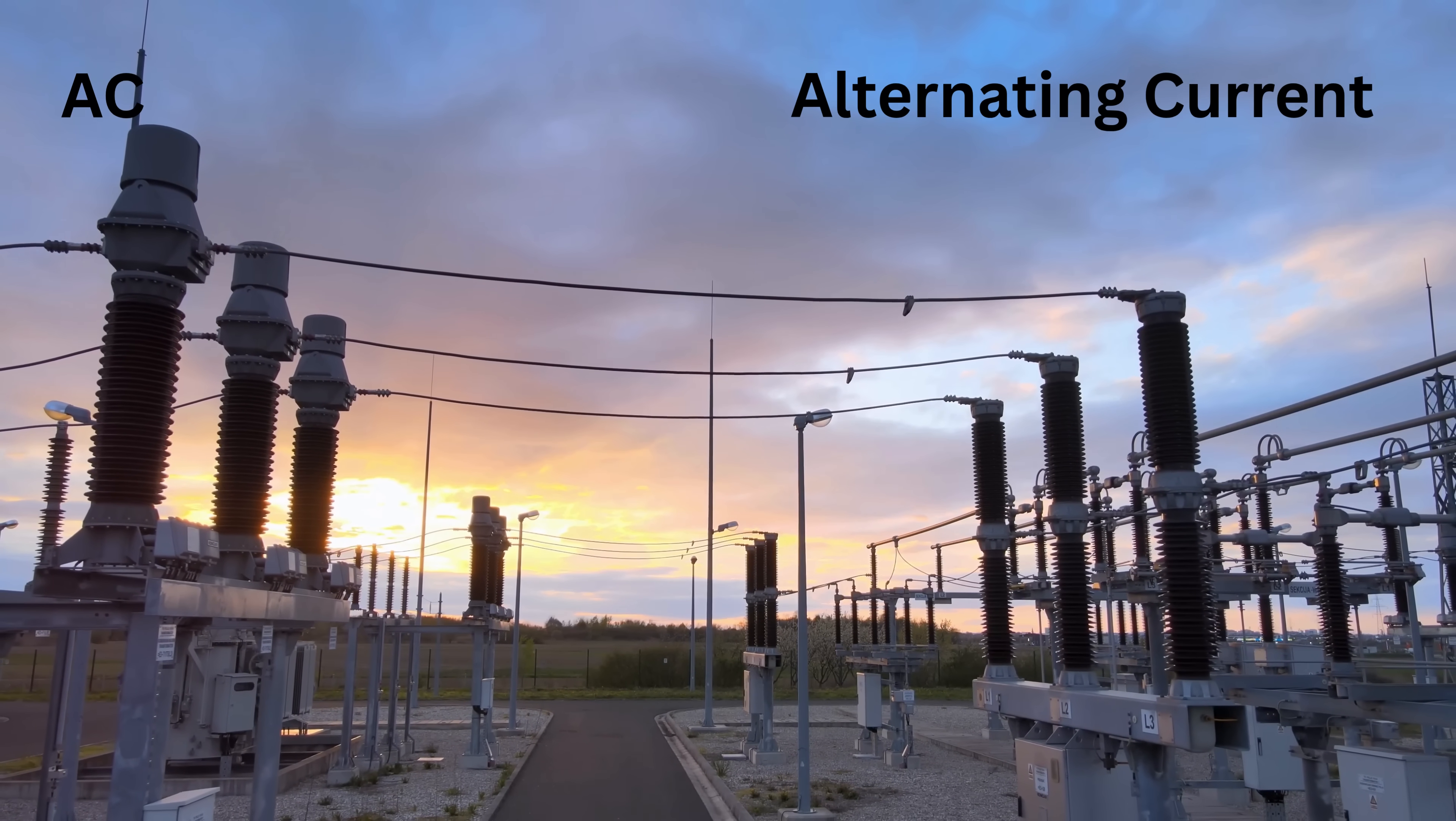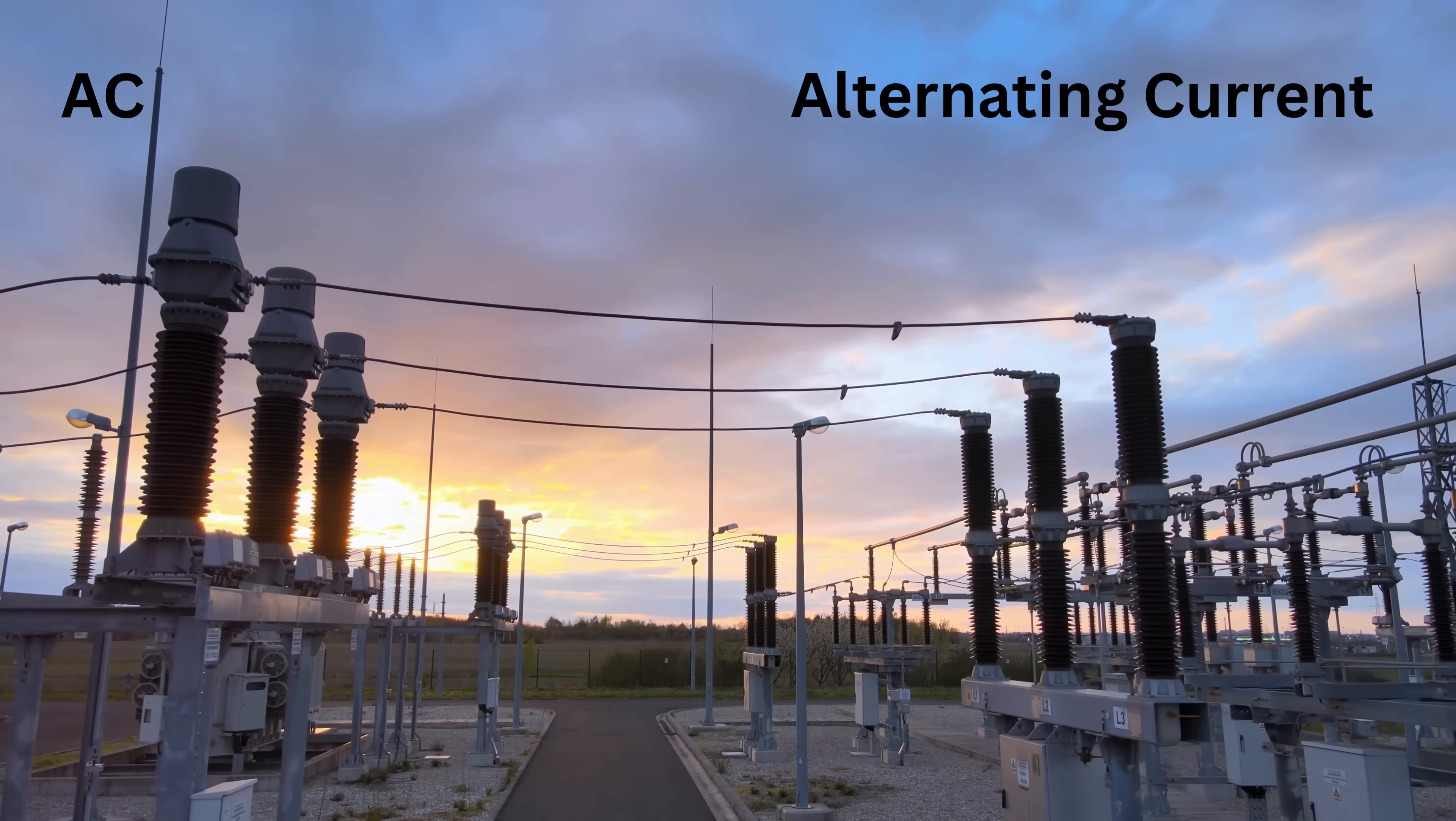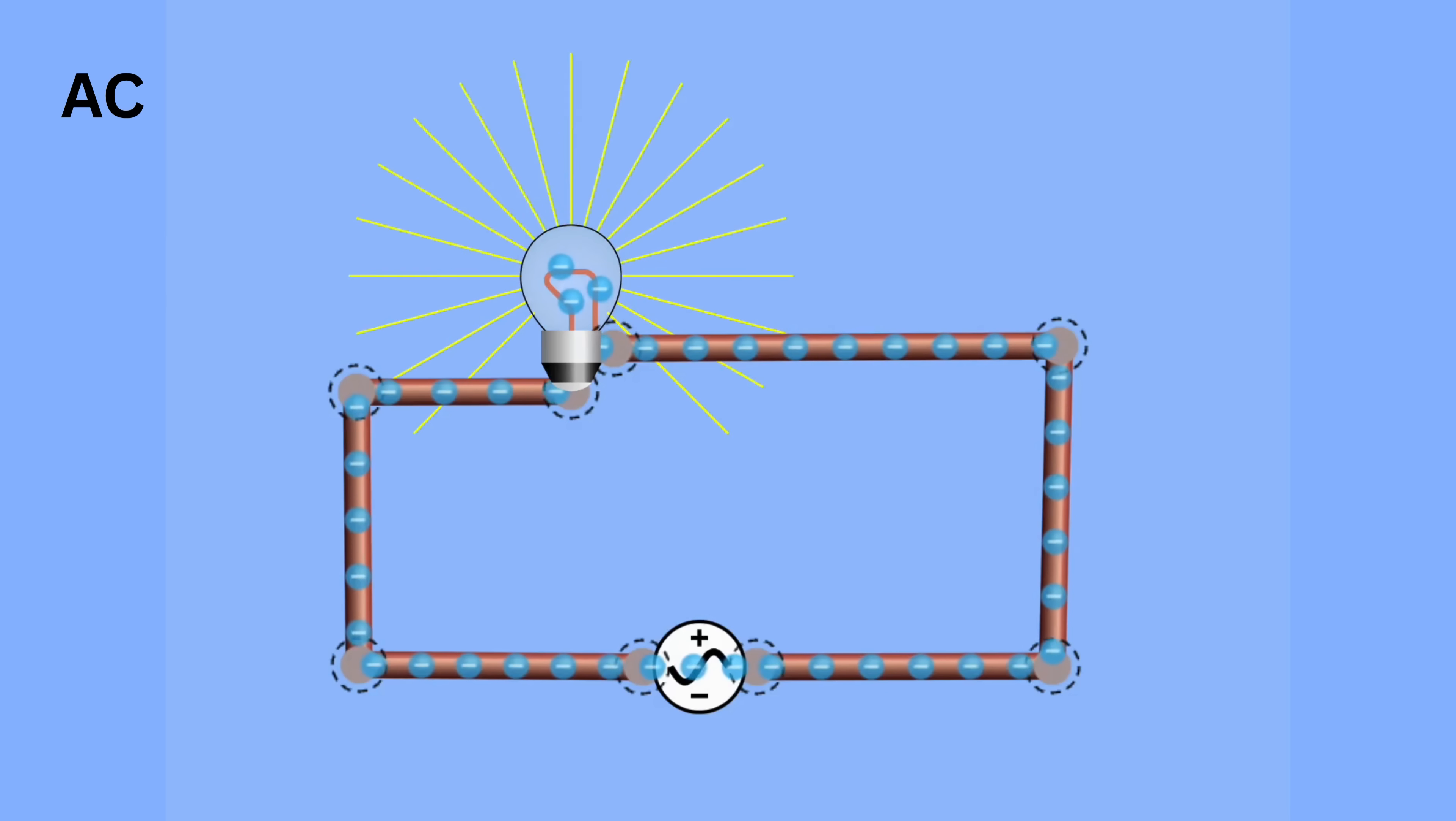Now, let's come to alternating current, which is the type of electricity that powers our homes, schools, and industries. In AC, the flow of electric charge keeps changing direction continuously.